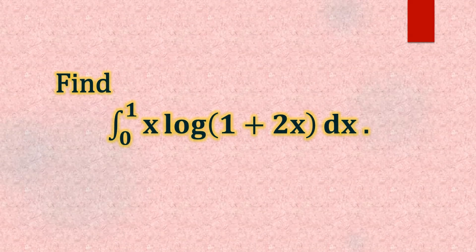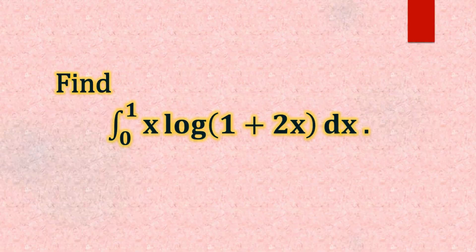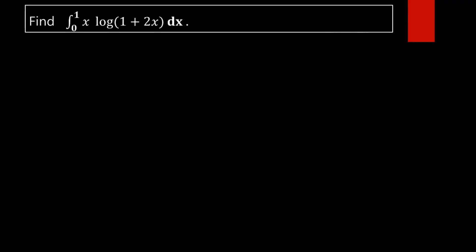Find the integral from 0 to 1 of x times log(1 + 2x) dx. We have to find the value of this integral: integral from 0 to 1 of x into log of 1 plus 2x dx.